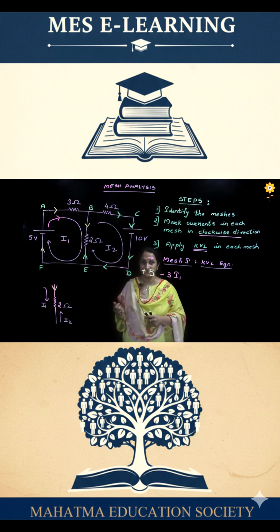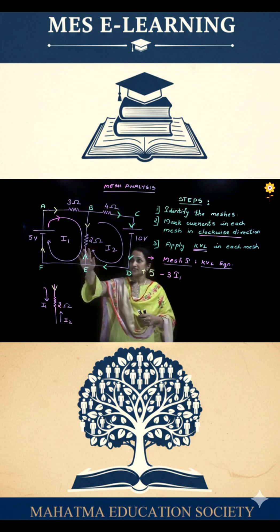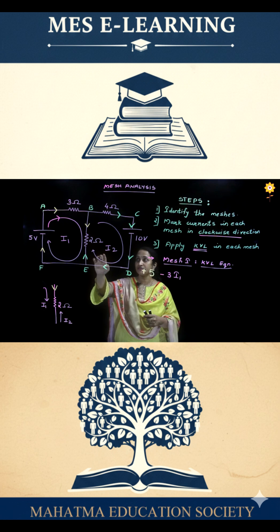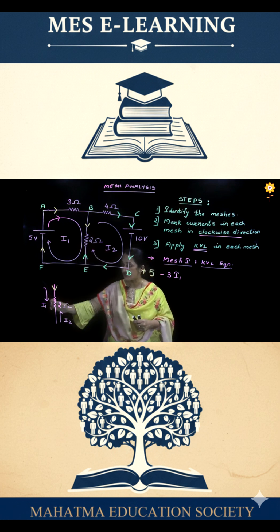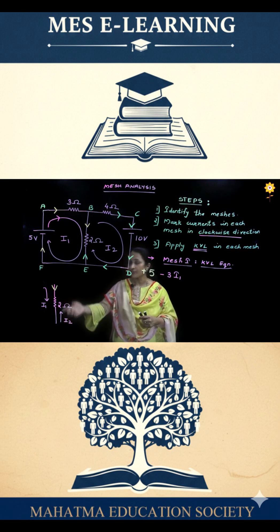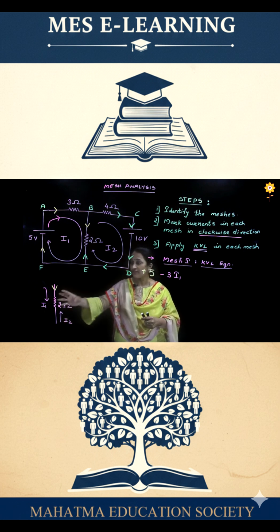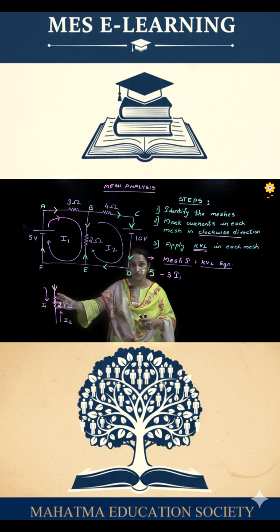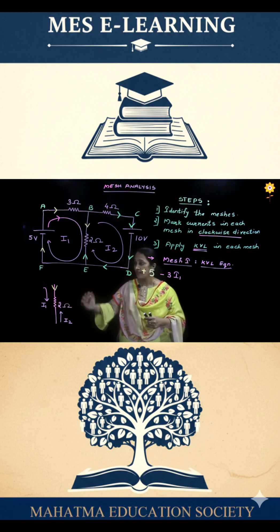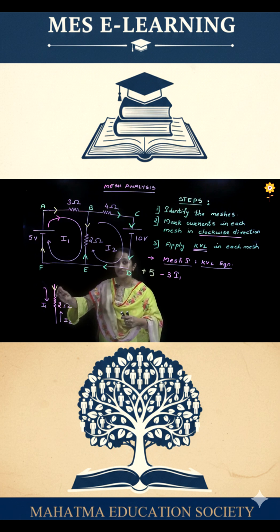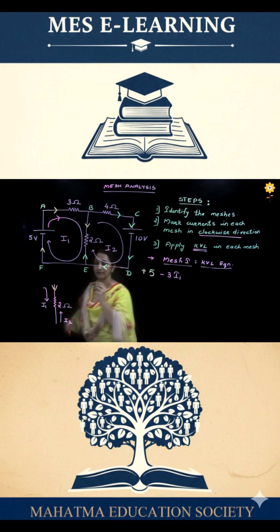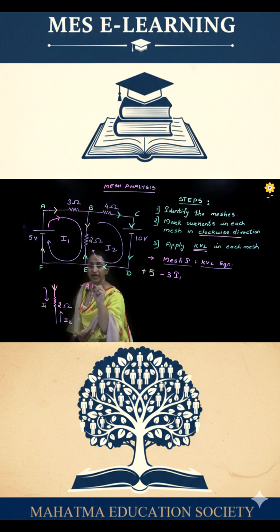Now, let us come to the third element that is present in mesh 1. If you see this 2 ohm resistor, it is common to mesh 1 as well as mesh 2. As a result of which, there are two currents flowing through this 2 ohm resistance. I1 is flowing in the downward direction and I2 is flowing through the upward direction. So how do we write the voltage drop across these 2 ohms by following Kirchhoff's voltage law? Now, since the direction of I1 matches with the direction in which we are moving when we are considering mesh 1, the drop across this can be written as minus 2 I1.